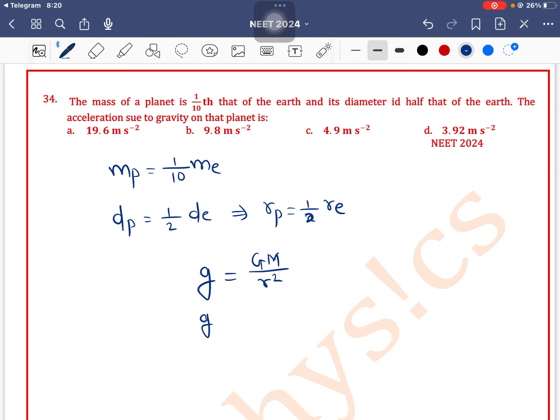So we can write gp/ge. If you take a ratio, then the capital G cancels out: mp (mass of planet) by me (mass of Earth) times (re/rp)². So mp/me is 1/10 and re/rp is 2 squared.